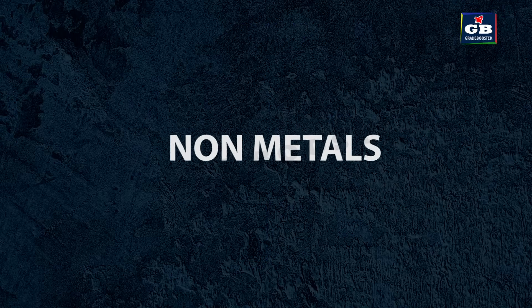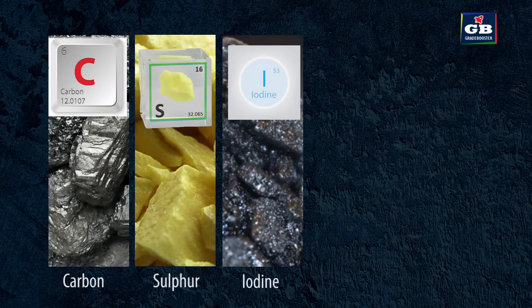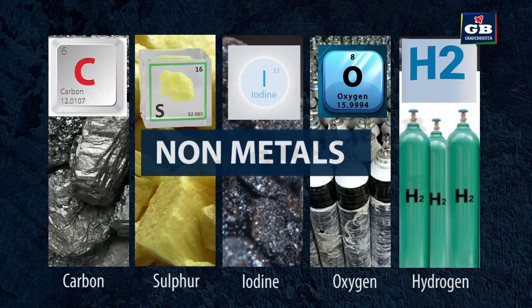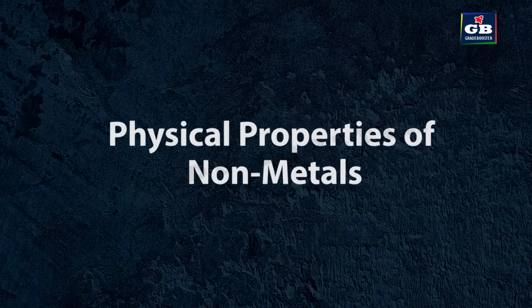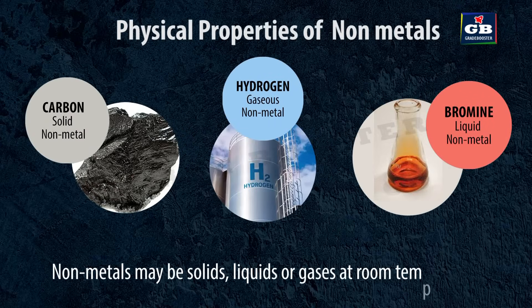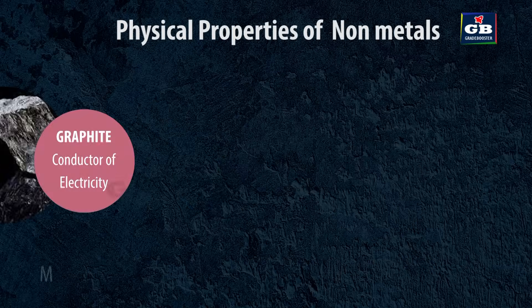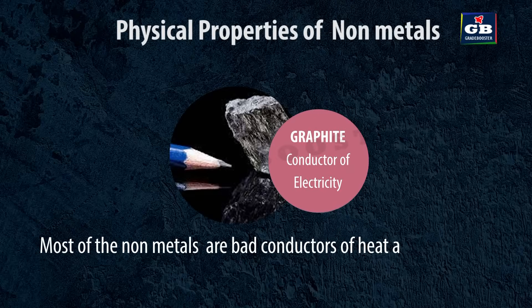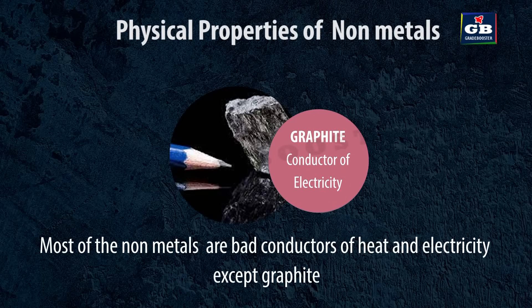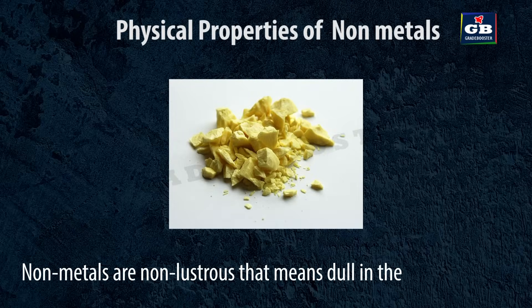Non-metals: carbon, sulfur, iodine, oxygen and hydrogen are some examples of non-metals. Physical properties of non-metals: non-metals may be solids, liquids or gases at room temperature. Non-metals are brittle, meaning they are hard but easy to break. Most non-metals are bad conductors of heat and electricity, except graphite. Non-metals are non-lustrous, meaning they are dull in their appearance.